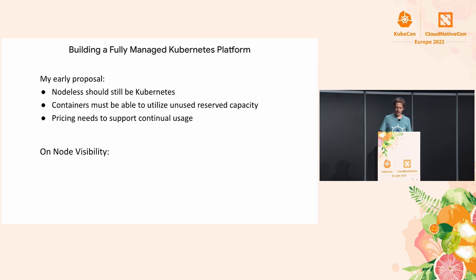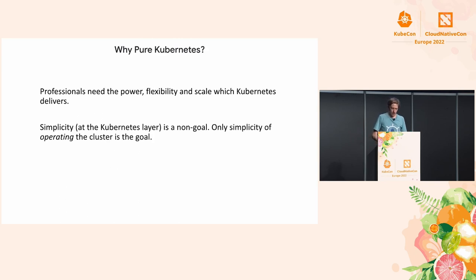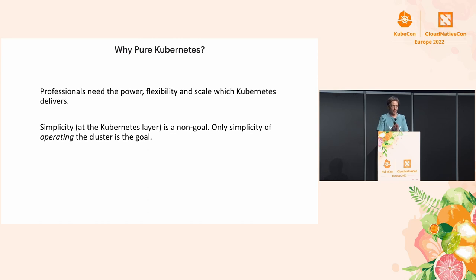On node visibility, I had a suggestion to make them visible while still hiding certain bits, like maybe the VM. The first point being that nodeless or fully managed Kubernetes should still be Kubernetes — why is that important?